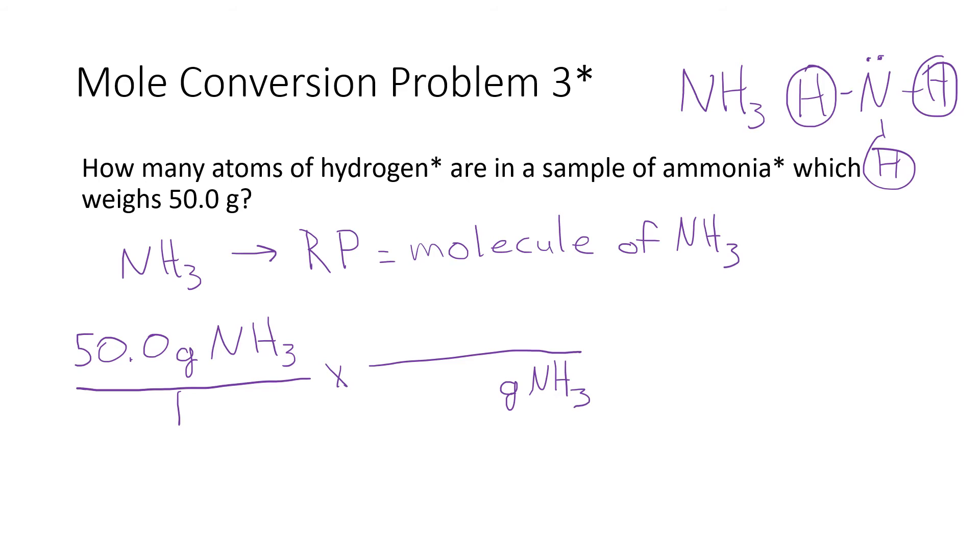Off of the radiation sign, I know I've got to go to representative particles, which are going to be molecules of ammonia. I know that for every 17 grams of ammonia there are 6.02 times 10 to the 23rd molecules. We've got to string one more factor onto here to go from molecules to atoms, and that is simply that for every one molecule of ammonia there are three atoms of hydrogen.